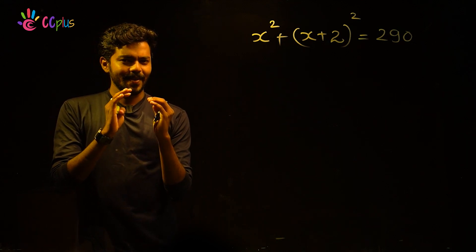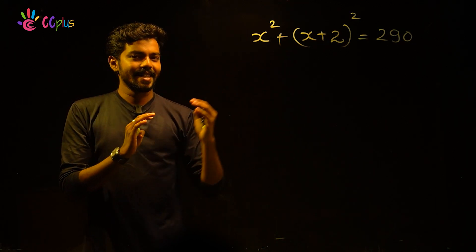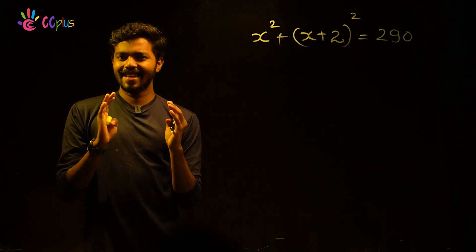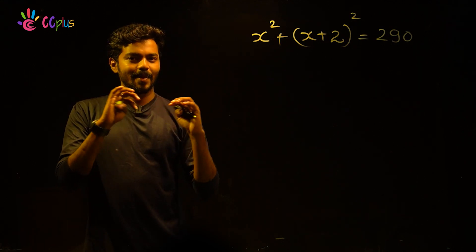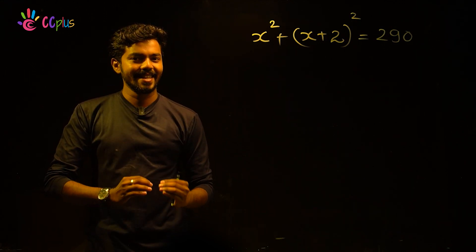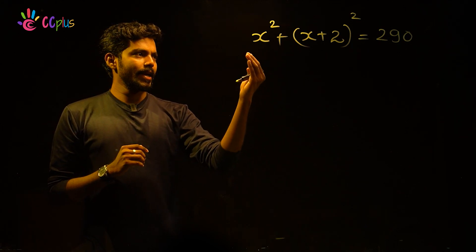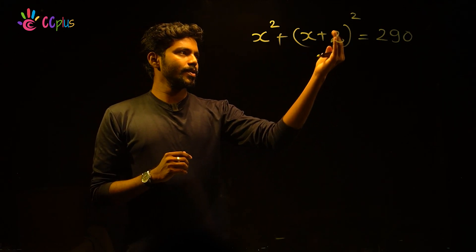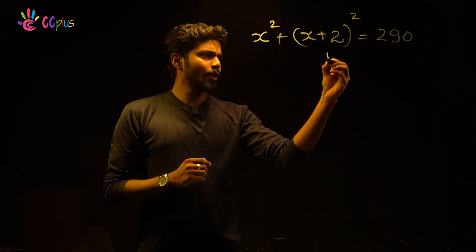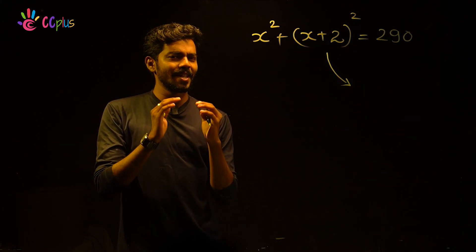Clear? This is how we expand to our quadratic equation. You can write x squared plus (x plus 2) the whole square equal to 290.